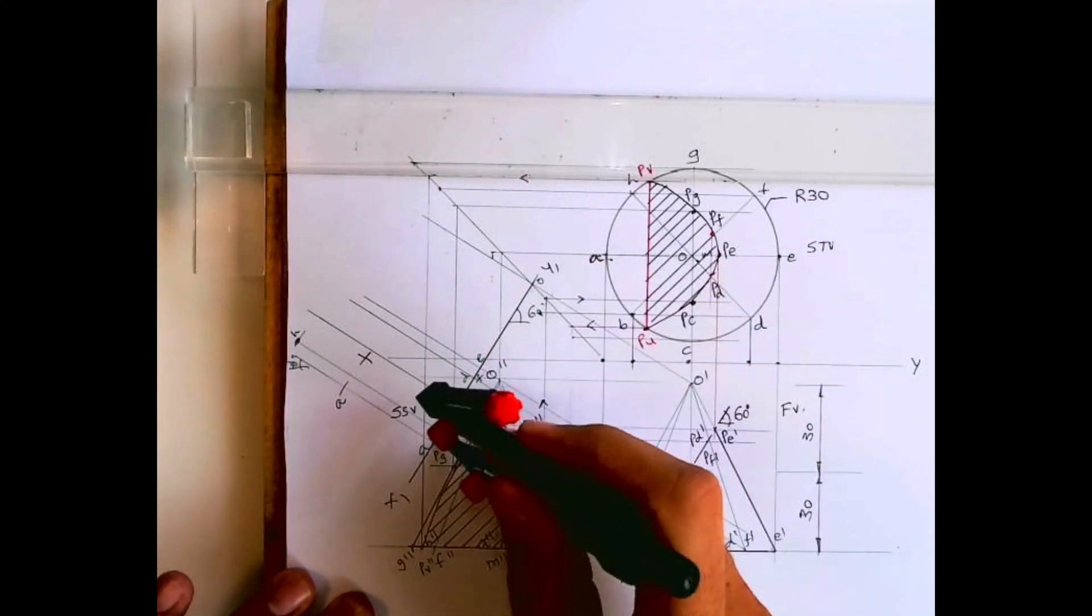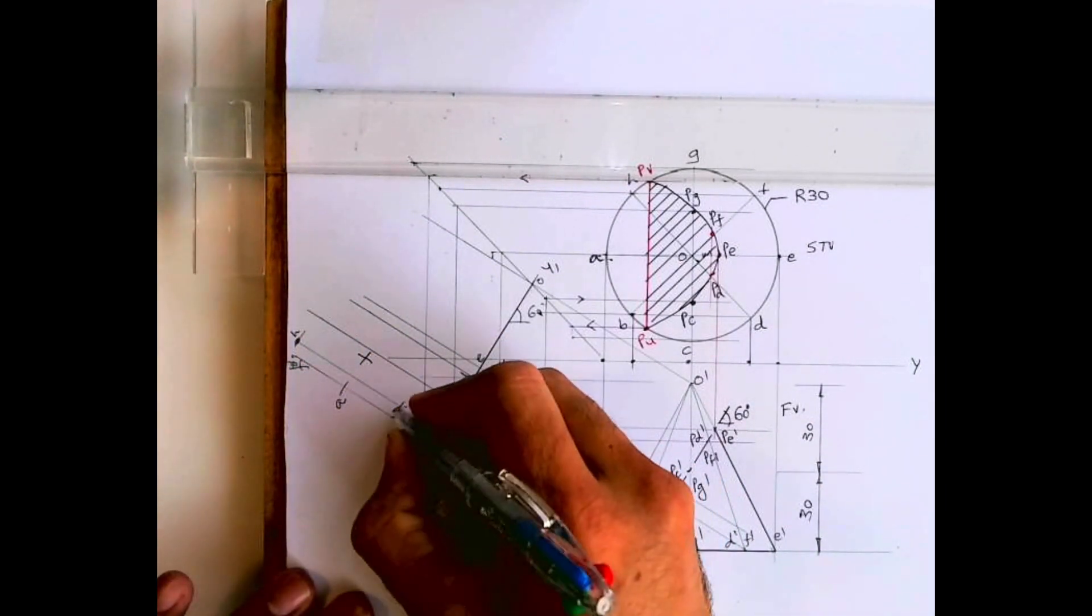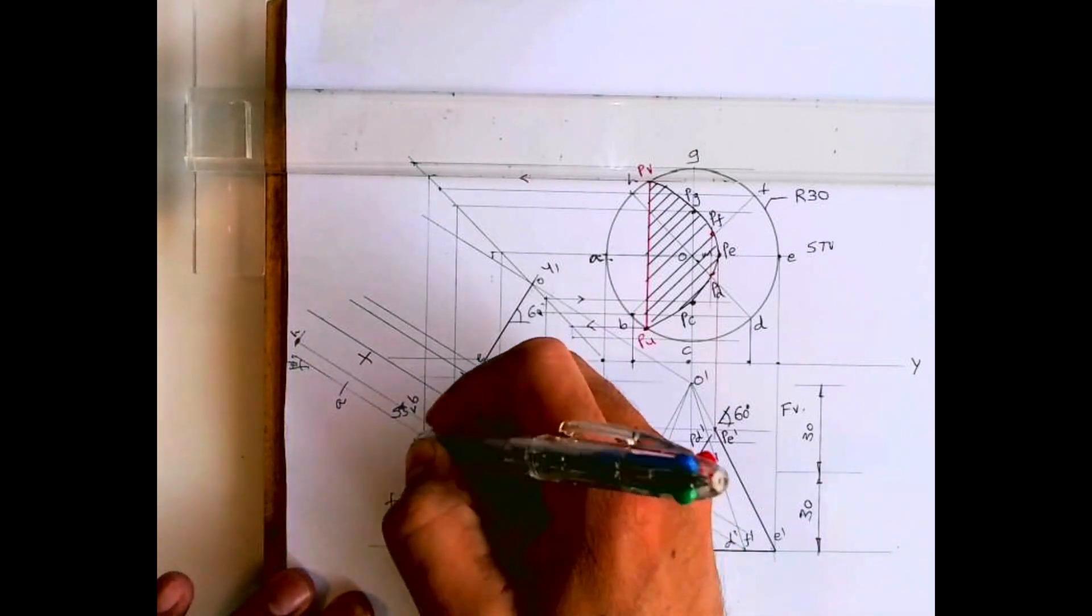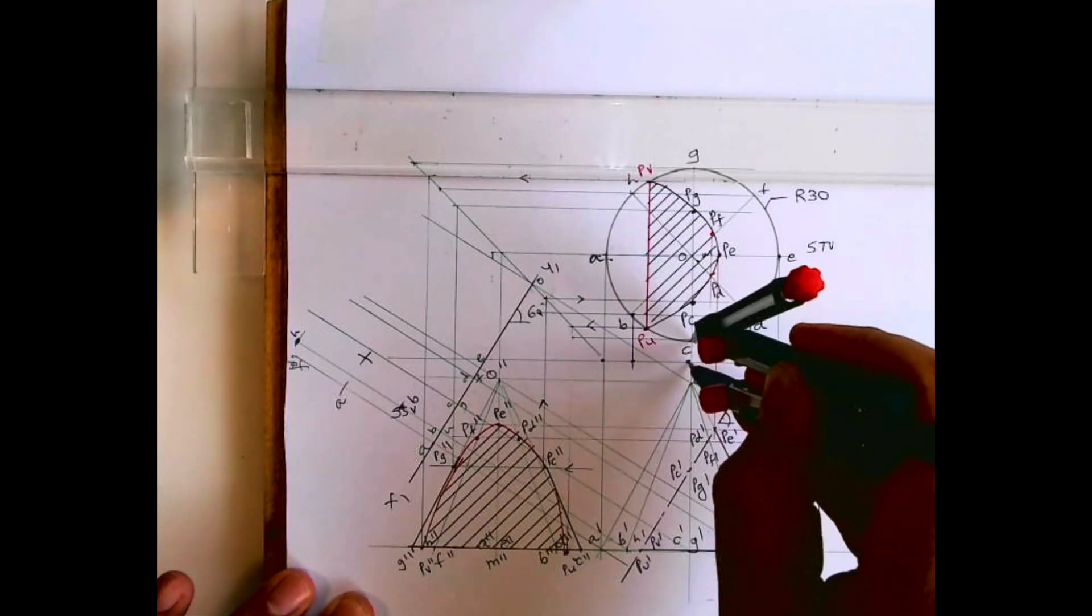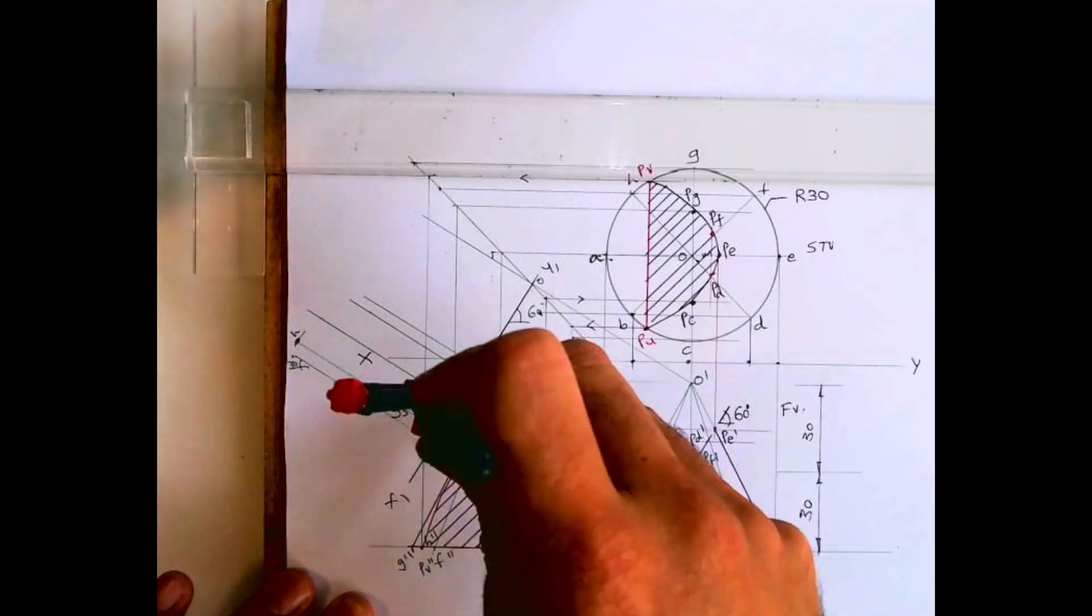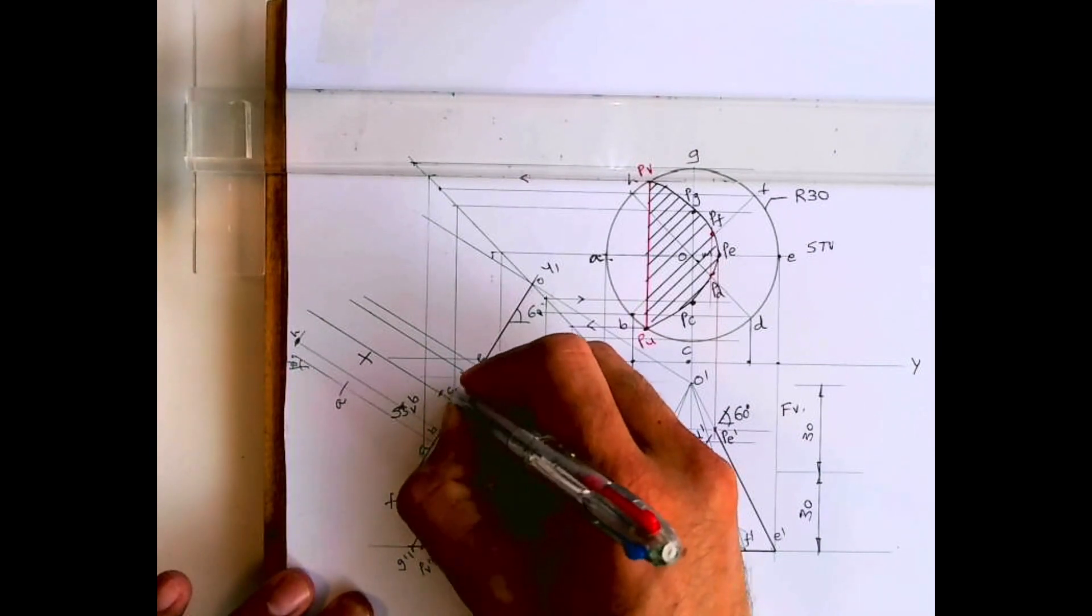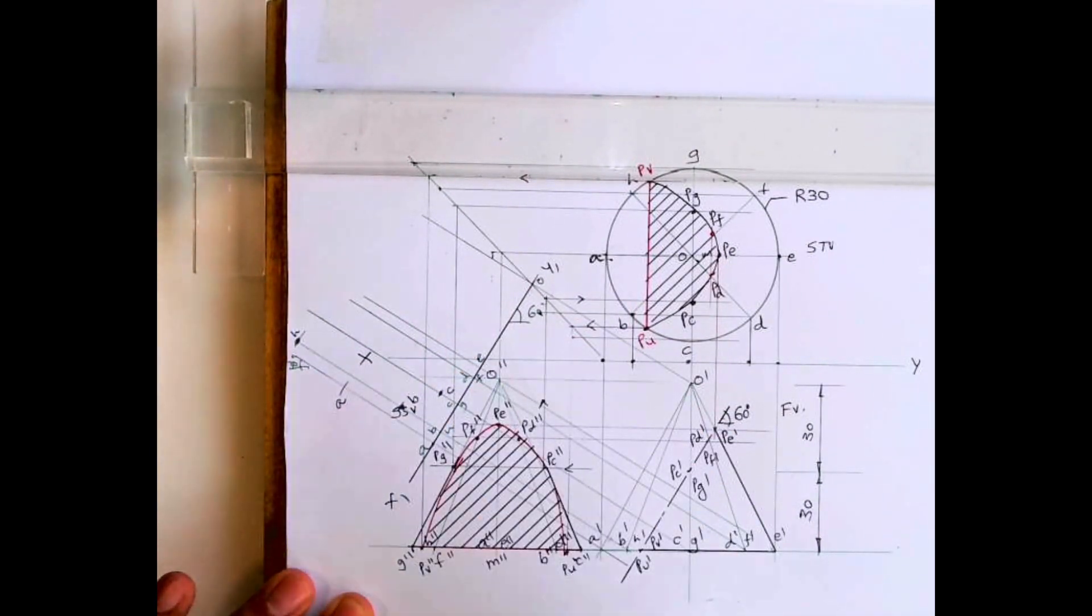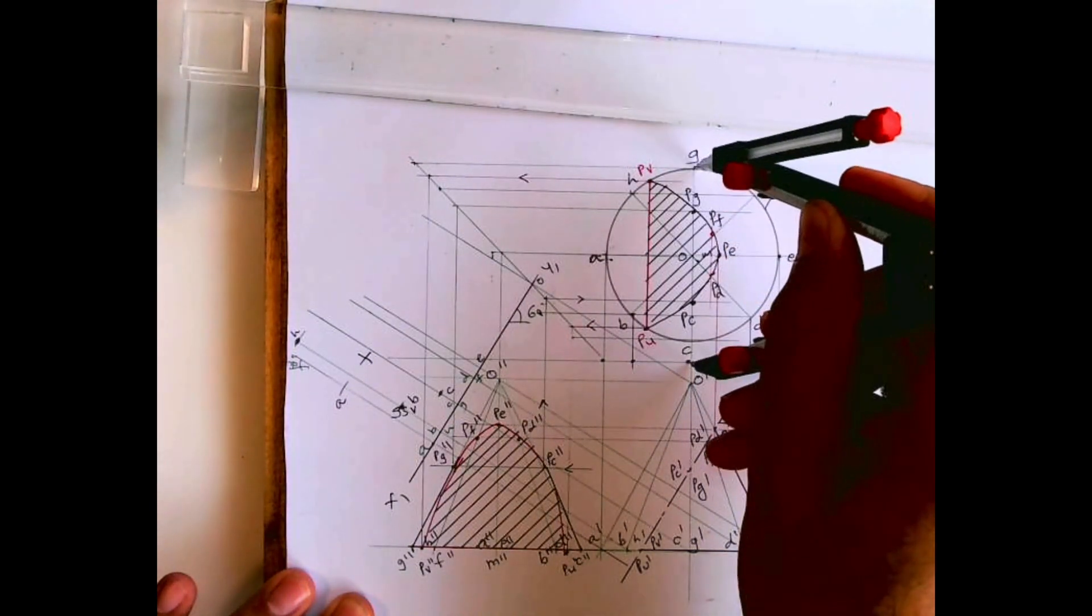After that I'll take this as b, I'll cut over here b. Then take xy to c and take xy to g.